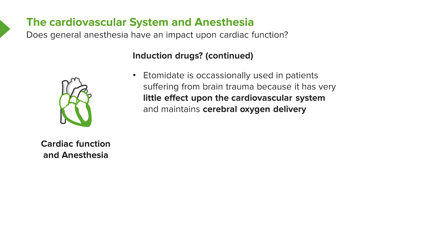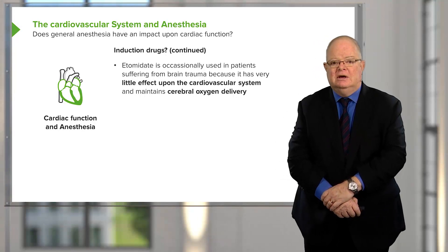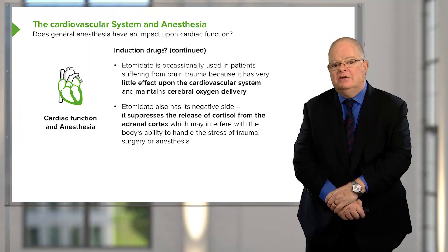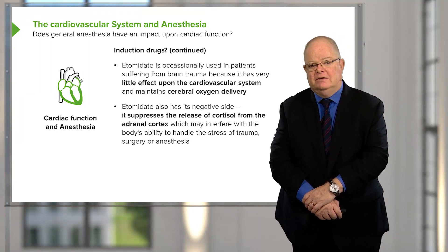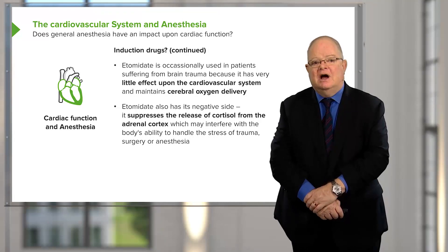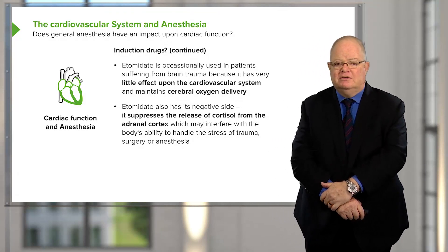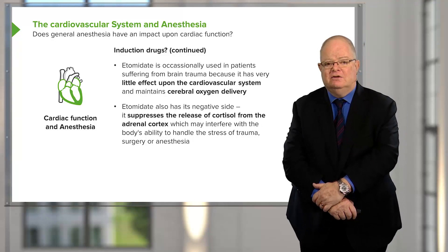Etomidate is a drug available in the United States for many years but not widely available elsewhere due to cost constraints. It is a very good drug for patients who have had brain trauma, because it has very little effect on intracerebral blood pressure, very little effect on the cardiovascular system, and cerebral oxygen delivery tends to remain stable. However, it suppresses the release of cortisol from the adrenal cortex, which may interfere with the body's ability to handle the stress of trauma, surgery, or anesthesia. There are reports suggesting that unexpected death in the weeks following surgery is higher in patients who received etomidate.